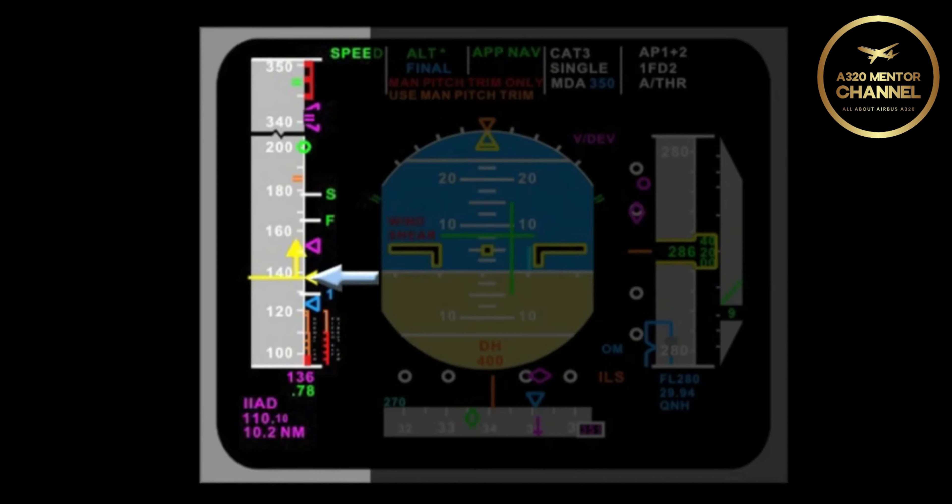Just below the managed speed bug, there is a horizontal yellow line. What is that? That indicates, on the tape, the actual speed at that moment.